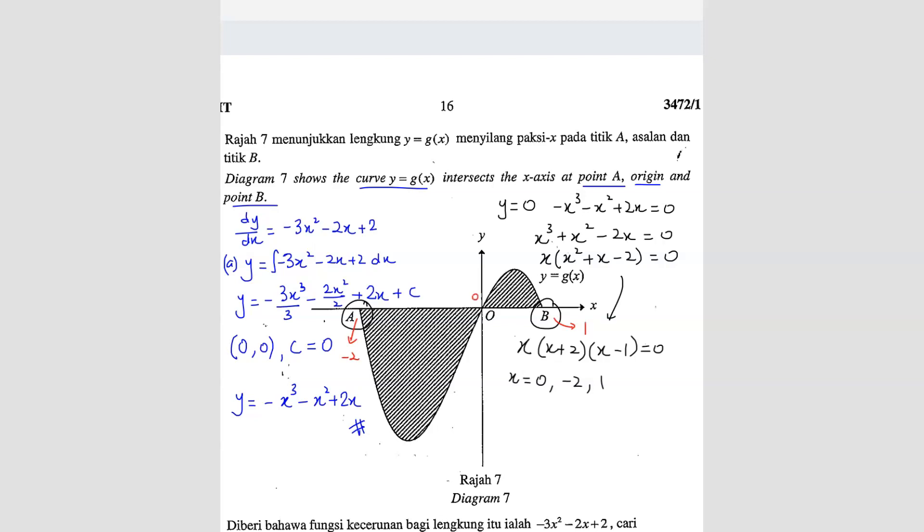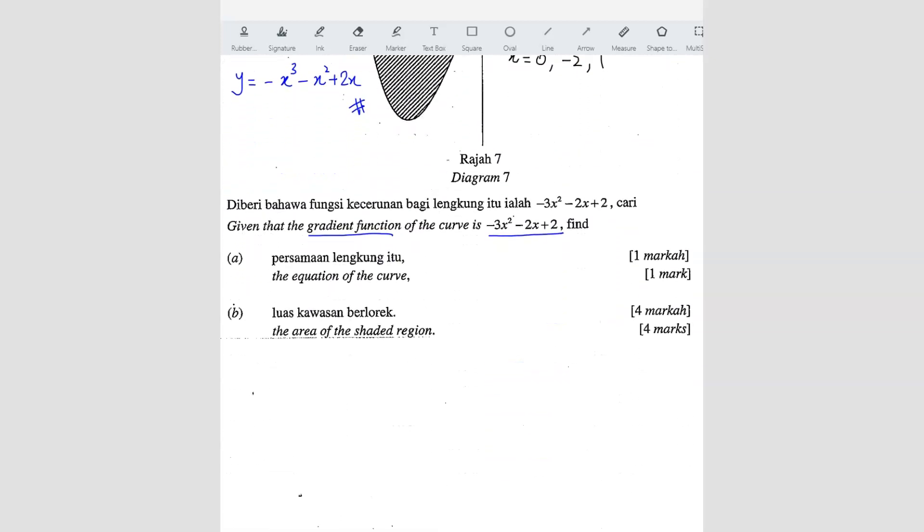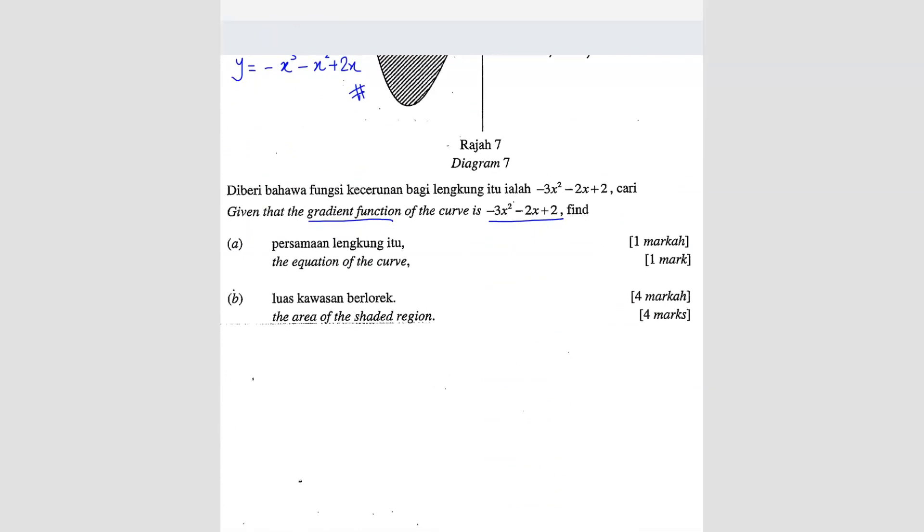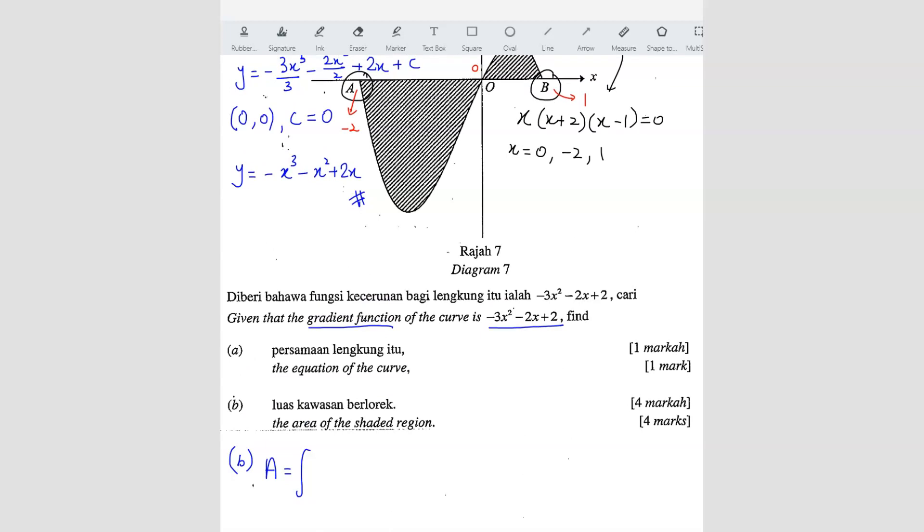So now we can do our finding area. So question B, you want to find area. So area you have to integrate. So the first range we're going to use is the range from negative 2 to 0.